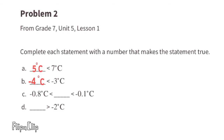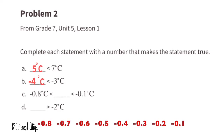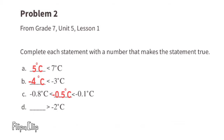That means we need a number to the right of negative 0.8 and to the left of negative 0.1 on the number line. We can put negative 0.5, because negative 0.5 is to the left of negative 0.1 and to the right of negative 0.8 on a number line. Part d: this number is greater than negative 2 degrees Celsius.